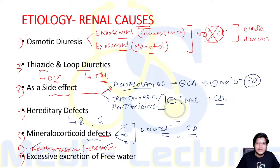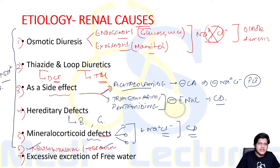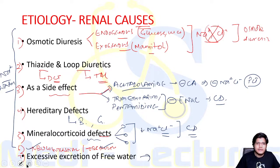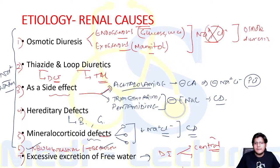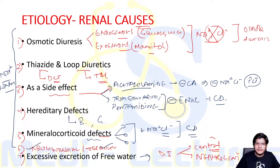Tubular interstitial injury like interstitial nephritis or obstructive uropathy can also lead to hypovolemia by causing excretion of water. A condition with only excessive free water excretion — without sodium loss — also leads to hypovolemia: this is diabetes insipidus, which can be central, where ADH is not formed in sufficient quantities, or nephrogenic, where ADH is present but unable to function due to a receptor defect.